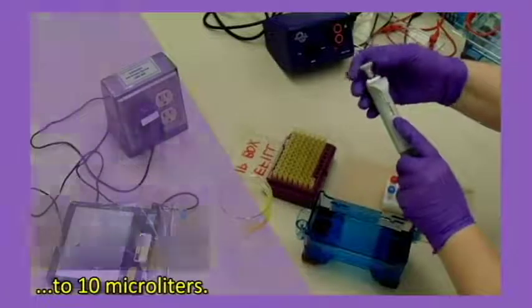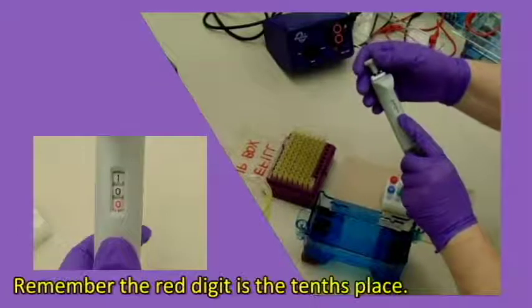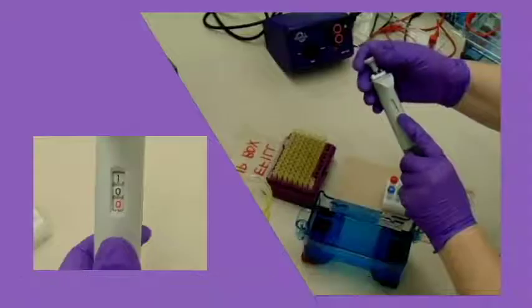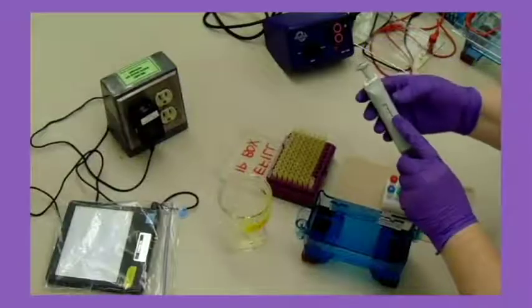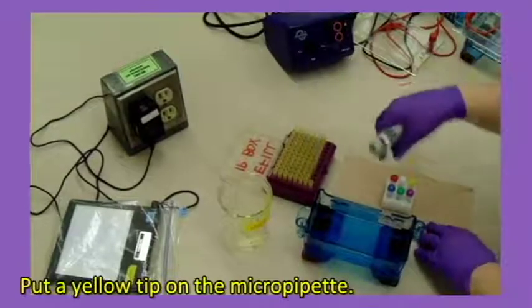For the DNA, we'll set the micropipette to 10 microliters. Remember, the red digit is the tenths place.